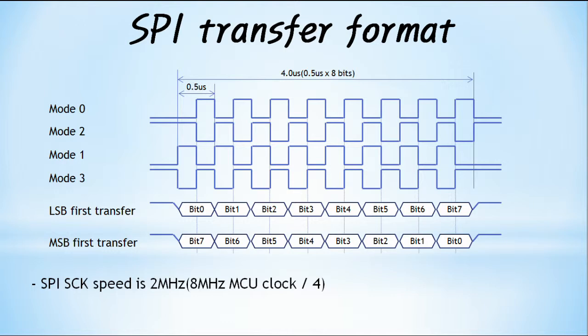Generally, SPI is based on 8-bit data communication, but users can set data bits up to 16 bits. There may also be optional LSB first or MSB first. Since the SPI slave device operates only when the SS pin is low, the master device must select the slave device to communicate by controlling SS low before starting communication. When communication is finished, SS should be controlled high.